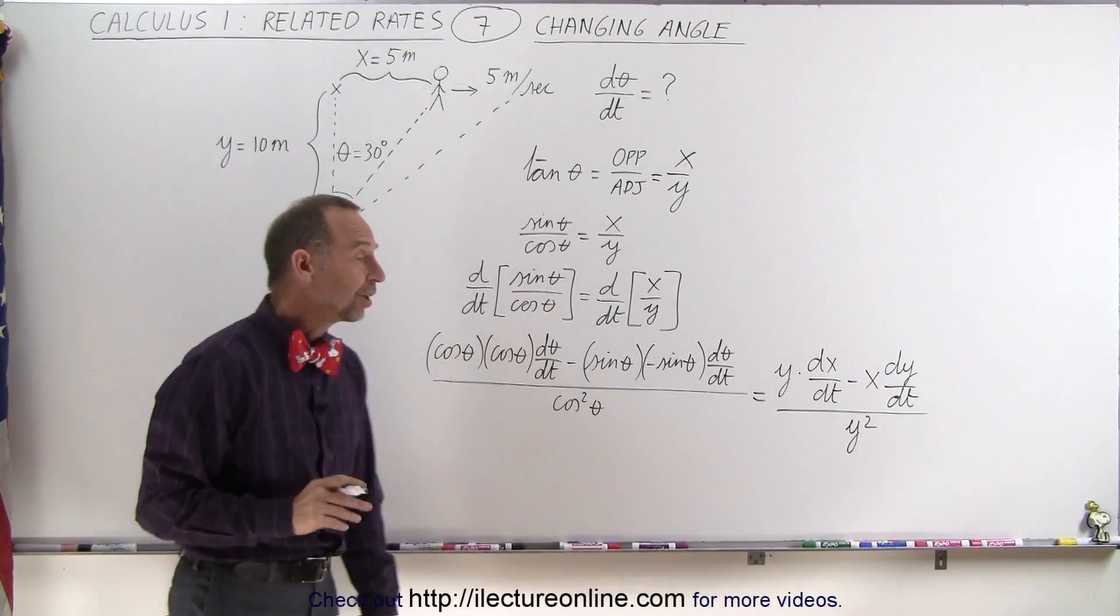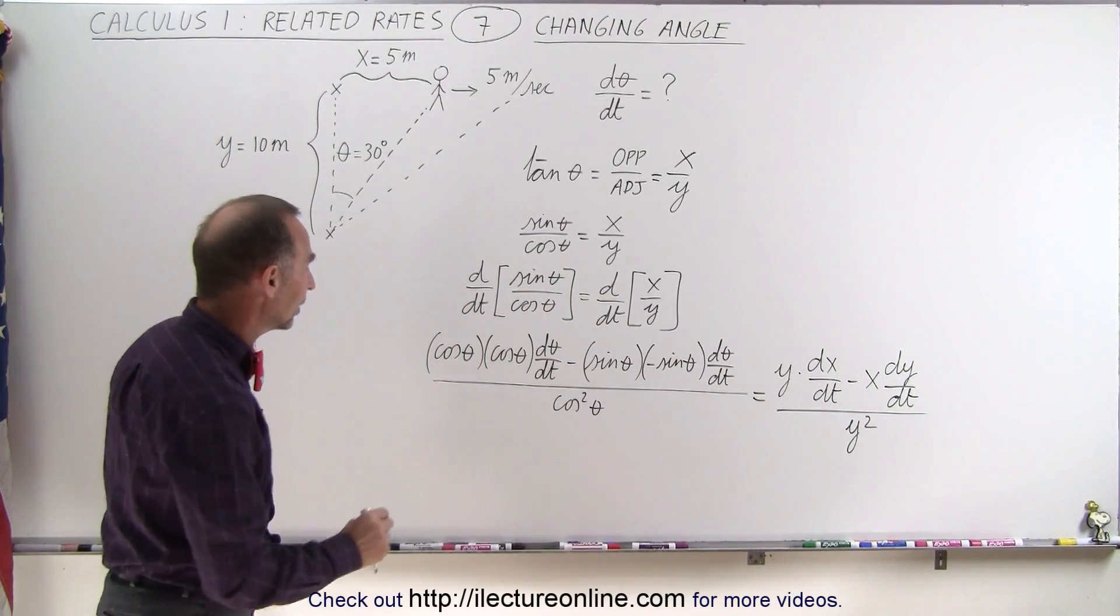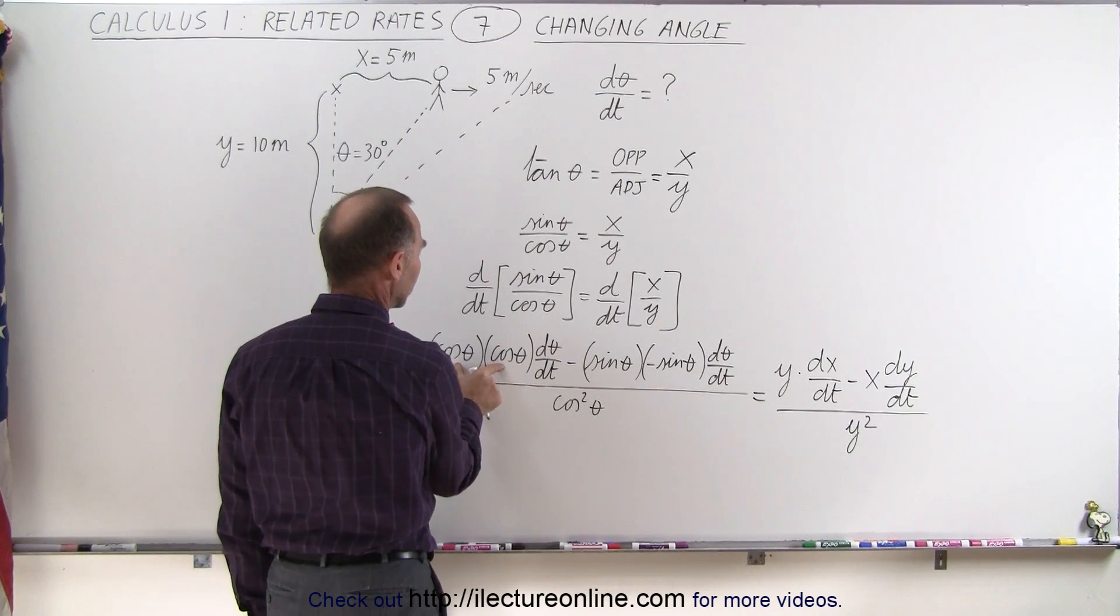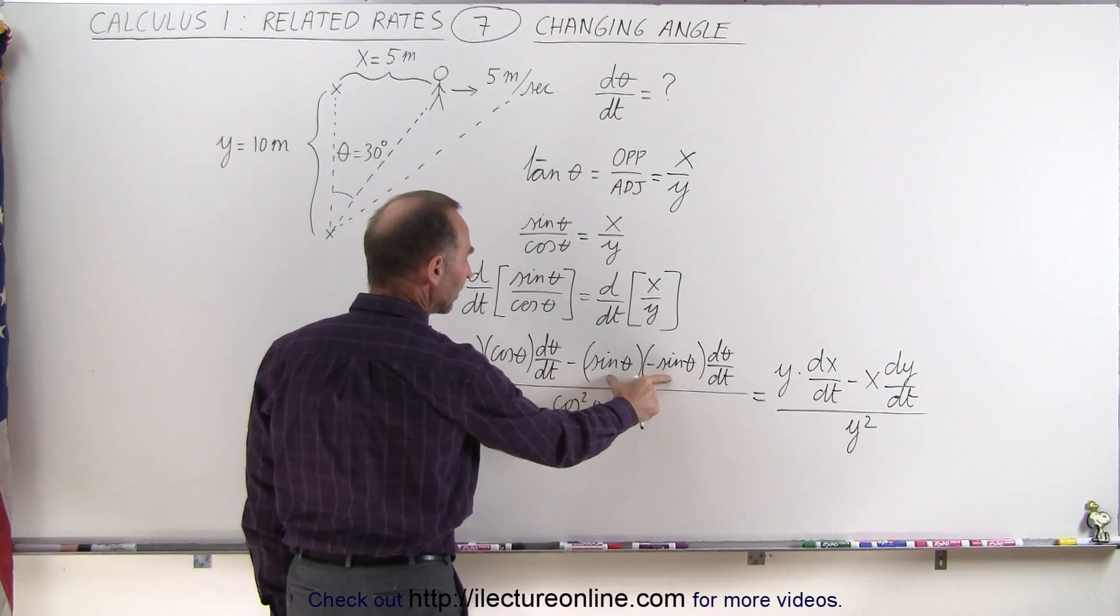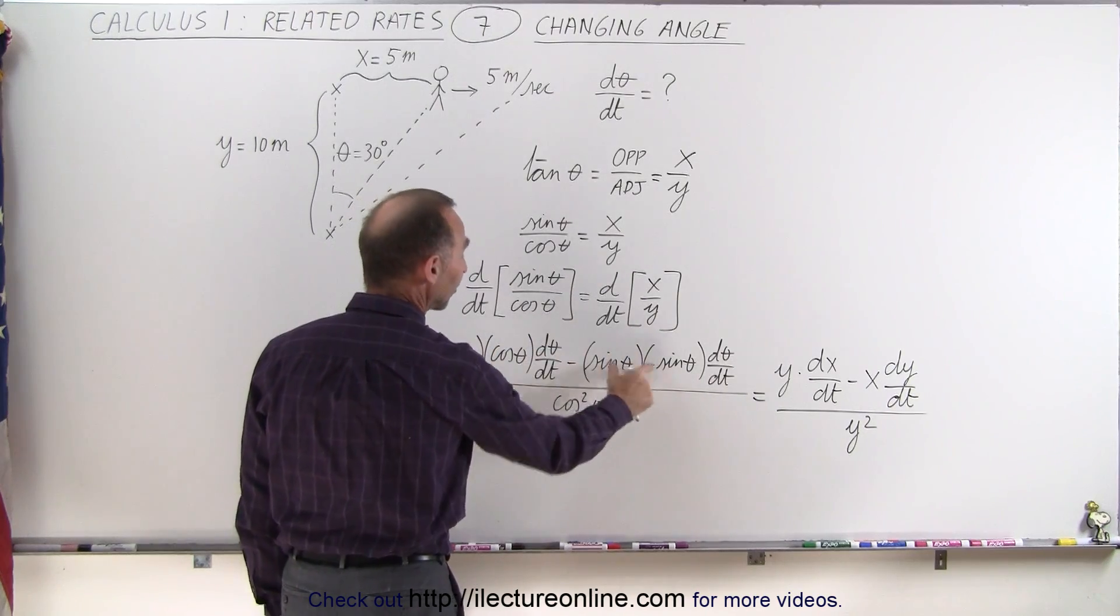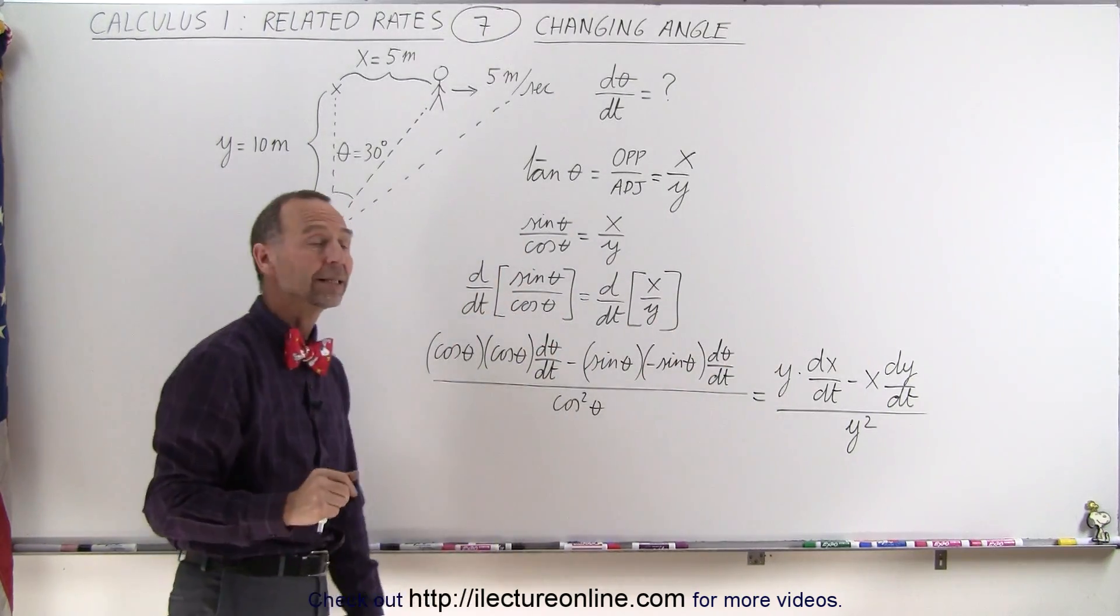Now this looks worse than it is, because realizing here we have the cosine squared of theta, and this minus cancels at this minus, which is the sine squared of theta. And so the cosine squared plus the sine squared equals 1, when we factor out the d theta dt.